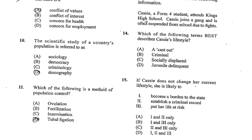Items 14 to 15 are based on the following information. Cassie, a Form 4 student, attends King's High School. Cassie joins a gang and is often suspended from school due to fights. Number 14. Which of the following terms best describes Cassie's lifestyle? Is it A. A cast out, B. Criminal, C. Social displaced, or D. Juvenile delinquent? The answer is D, juvenile delinquent. Number 15. If Cassie does not change her current lifestyle, she is likely to: 1. Become a burden to the state; 2. Establish a criminal record; 3. Put her life at risk. The answer would be D, all of them.